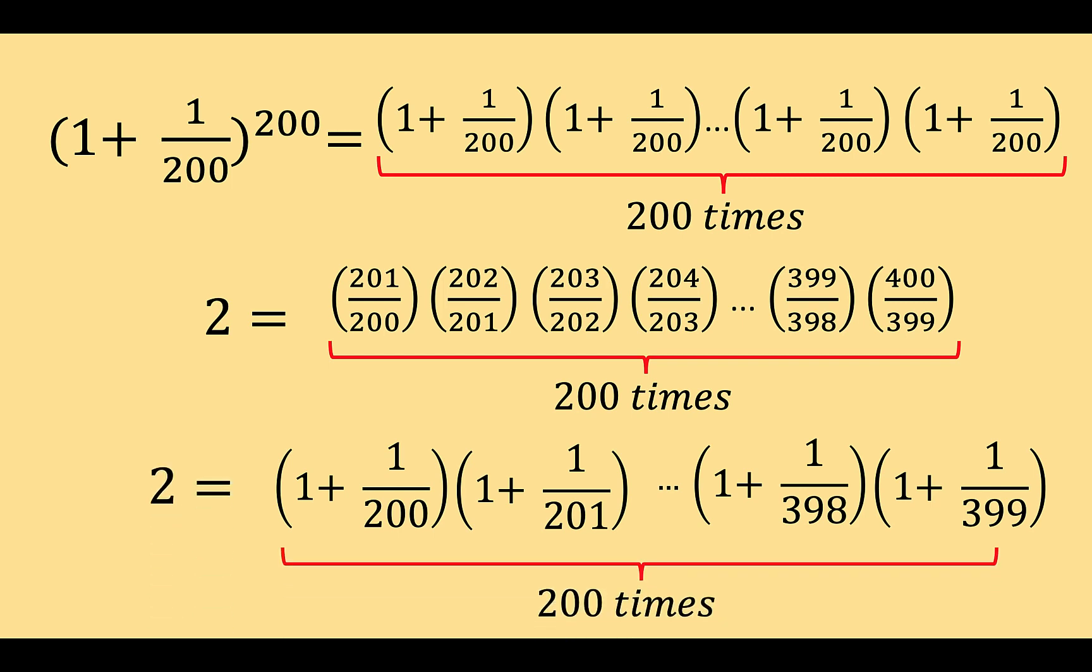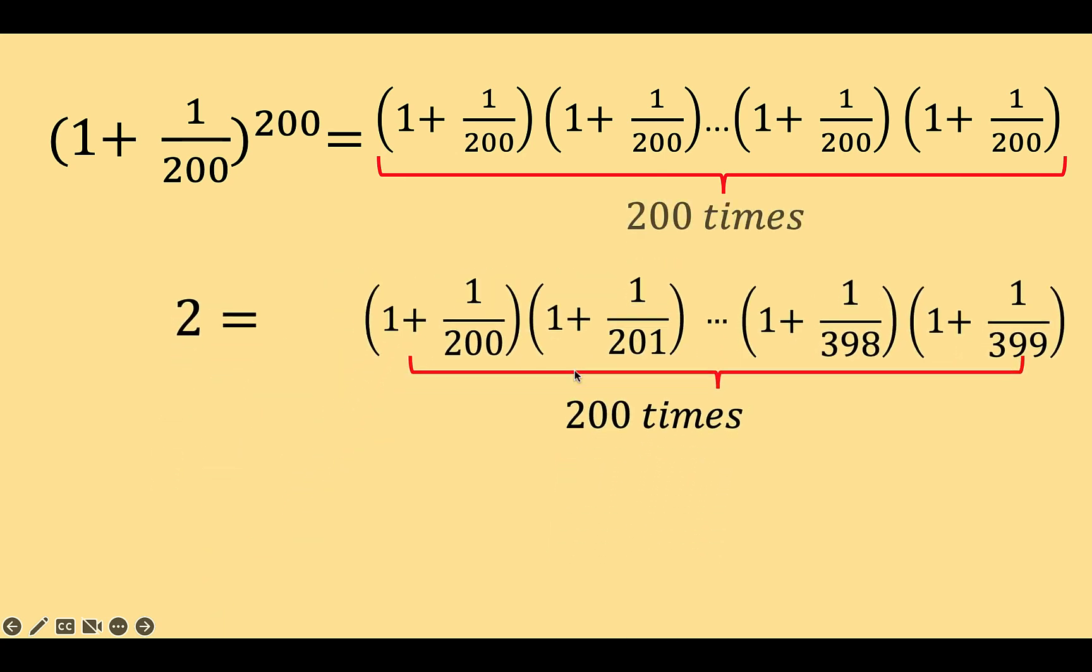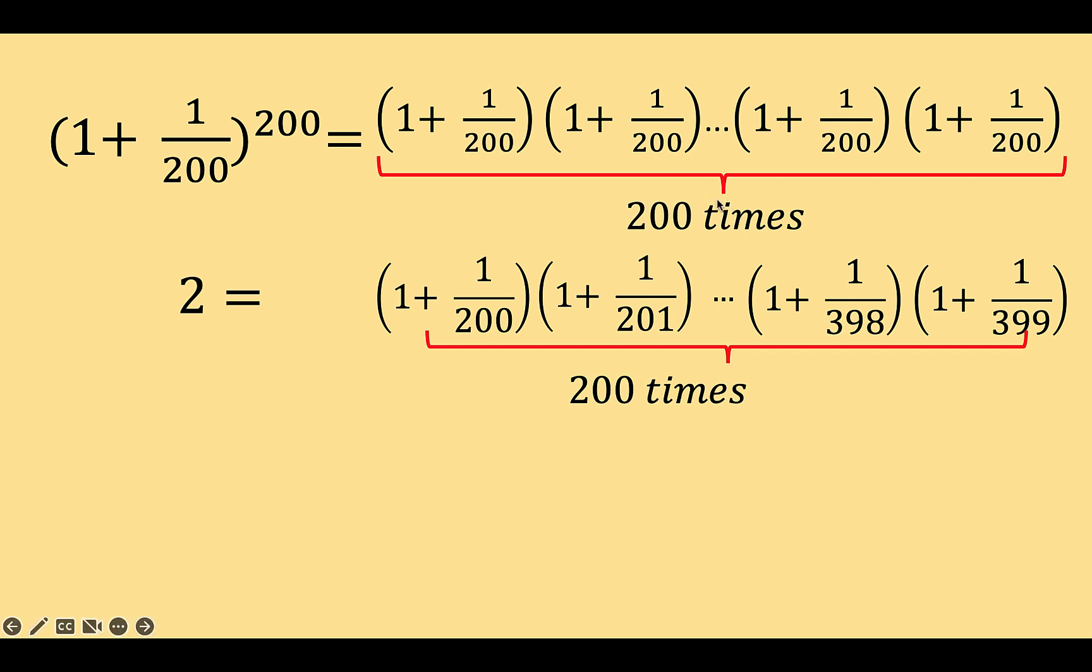Also, we know that there are 200 factors here all in all. Now let's remove this middle equation and let's compare these two expansions. There are 200 factors at the top and there are 200 factors at the bottom.